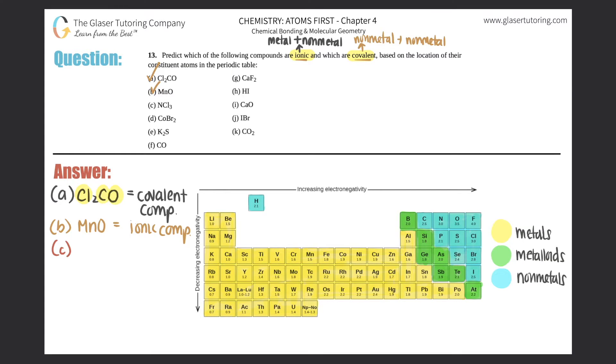C, we have nitrogen and Cl3. So we have nitrogen and chlorine. Nitrogen is here, it's a non-metal. Chlorine is over here again, that's also a non-metal. So this would be a covalent compound.